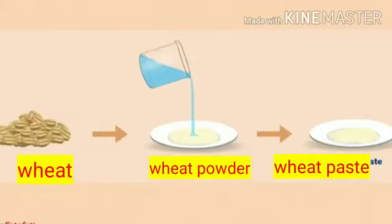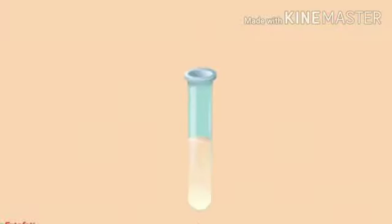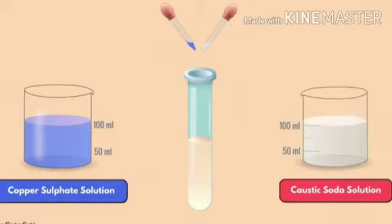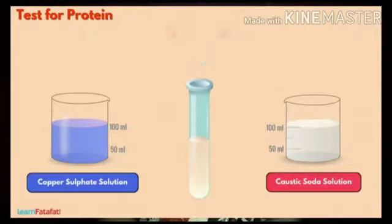To test the presence of protein, take some food. If you take solid food, first make a paste or powder of it. Take this paste or powder in a test tube, add 10 drops of water and shake well. Then add 2 drops of copper sulfate solution and 10 drops of caustic soda solution and shake well. Let it stand for a few minutes. If the content changes to a violet color, it shows the food item contains protein.